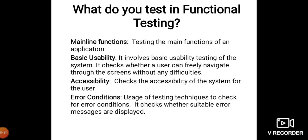There are four main concerns in functional testing. First, mainline functions — testing the main functions of the application software. Second, basic usability — it checks whether users can freely navigate through various screens without any difficulties. Third, accessibility — checks the accessibility of the system for users. Fourth, error conditions — uses testing techniques to check for error conditions, verifying whether suitable error messages are displayed.